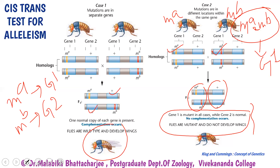So they are one complementation group. In case one, when we crossed MA with MB the result was a wild type fly, indicating the two mutations are in two different genes. A mutant F1 fly indicates that the two mutations are present in the same gene — that is, the two mutations are alleles of the same gene. This was the complementation test devised by Edward B. Lewis.